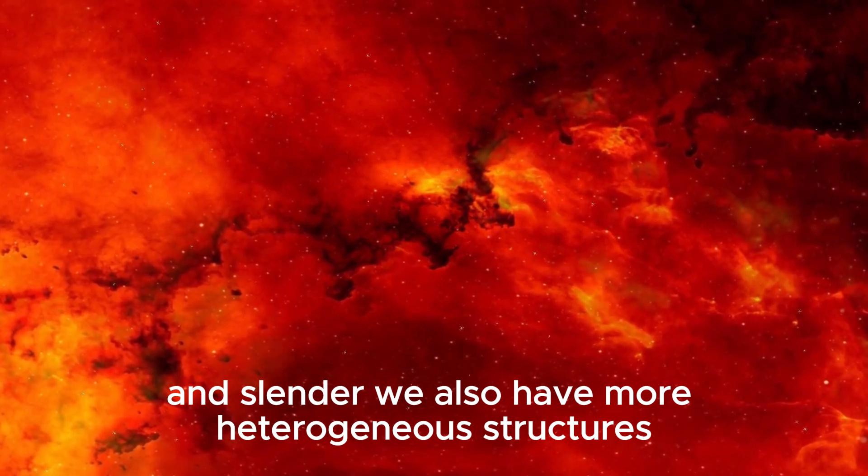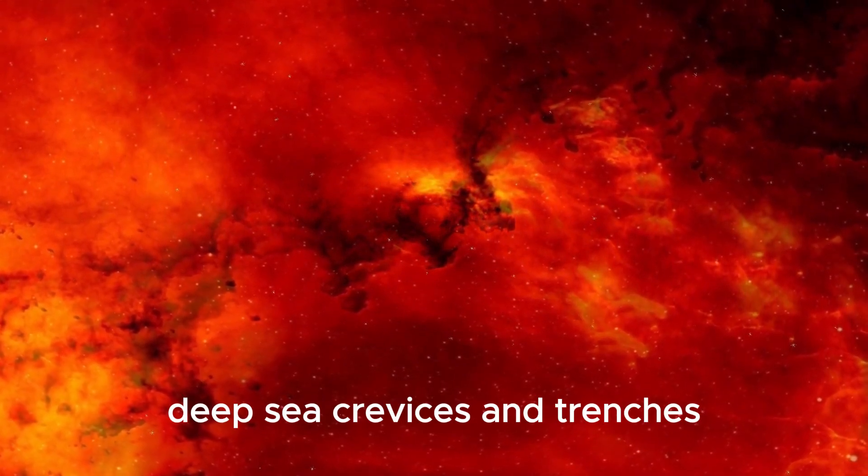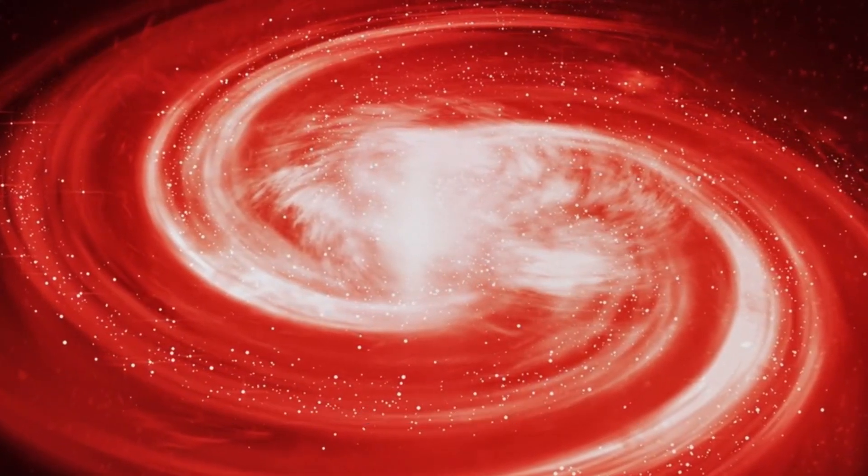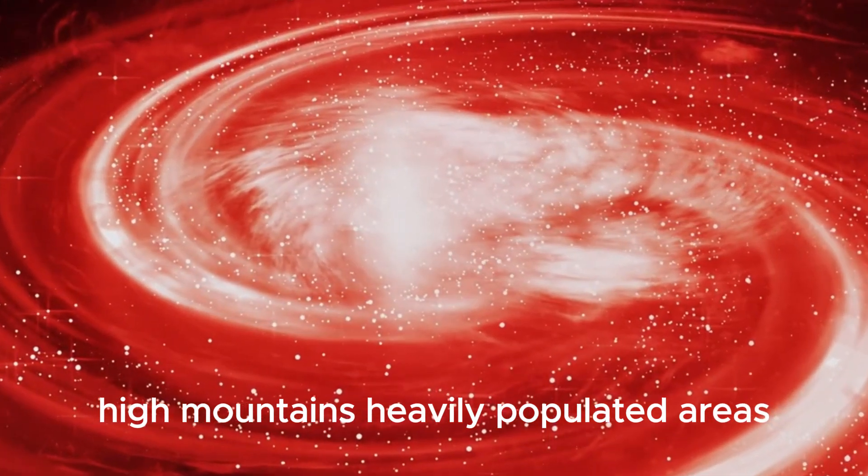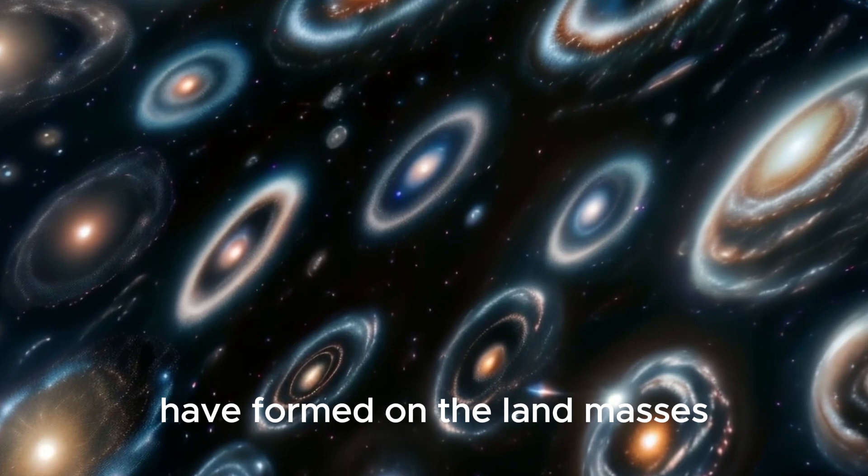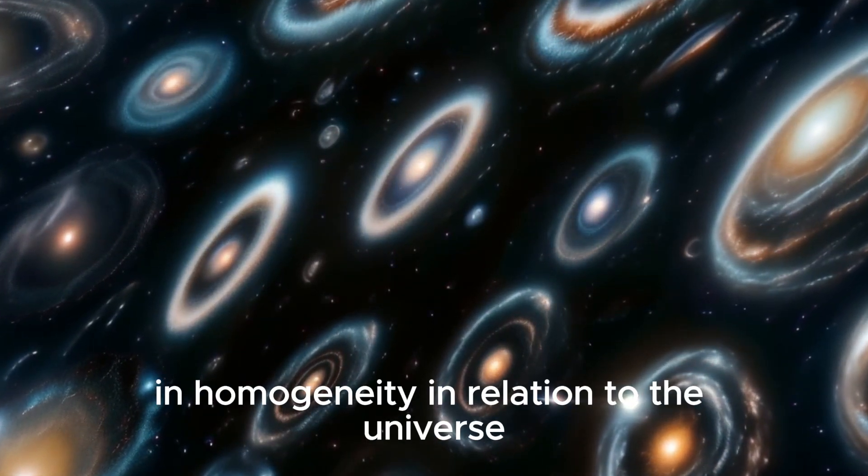We also have more heterogeneous structures within the oceans and on the continents. Deep sea crevices and trenches, shallow sections, lagoons, seas. Deserts, high mountains, heavily populated areas, and sparsely populated regions have formed on the land masses. But what can we learn from this inhomogeneity in relation to the universe?